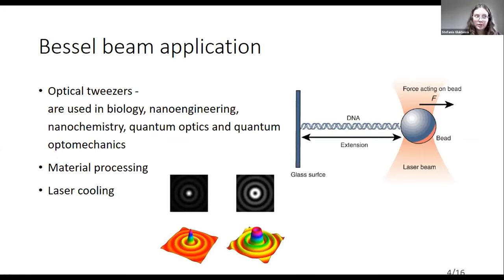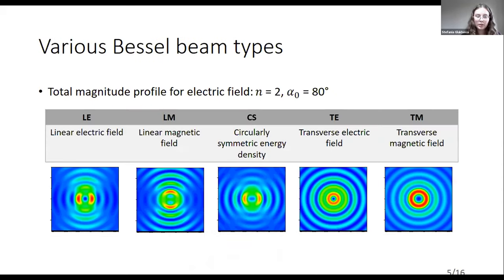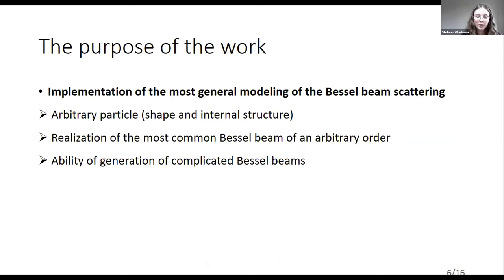The application sphere of Bessel beams is vast. One of the most popular is optical manipulation, in particular optical tweezing. Also, Bessel beams are used in material processing, laser cooling, and many other areas. Depending on the Bessel beam order, it may have its maximum or minimum at the center. There are also various vectorial Bessel beam types, and in the pictures you can see the electric field magnitude profile for different Bessel beams for the second order in a non-paraxial case.